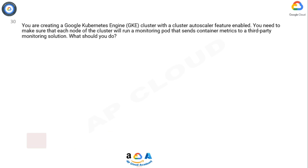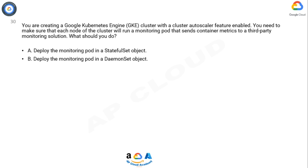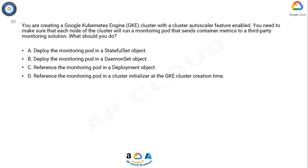You are creating a Google Kubernetes Engine (GKE) cluster with a cluster autoscaler feature enabled. You need to make sure that each node of the cluster will run a monitoring pod that sends container metrics to a third-party monitoring solution. What should you do? Option A: deploy the monitoring pod in a StatefulSet object. Option B: deploy the monitoring pod in a DaemonSet object. Option C: reference the monitoring pod in a Deployment object. Option D: reference the monitoring pod in a cluster initializer at the GKE cluster creation time. Now take 10 seconds to think about the answer.